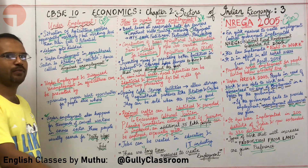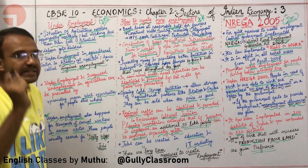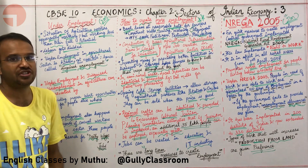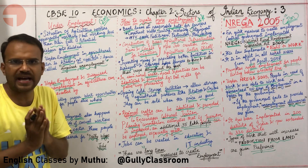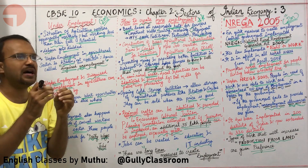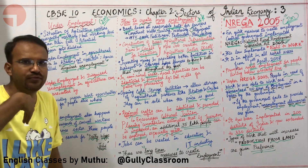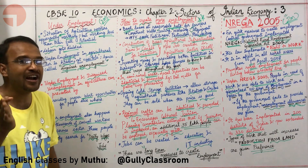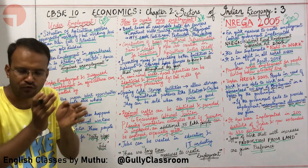There is a type of employment in agriculture called underemployment. Before going into the theory, let's look at an example. Say a farmer has two acres of land. He cultivates crops and will always have four months of water via canals annually.